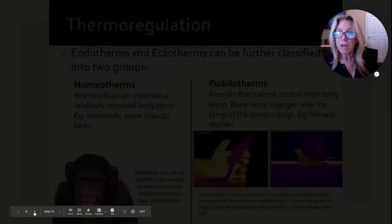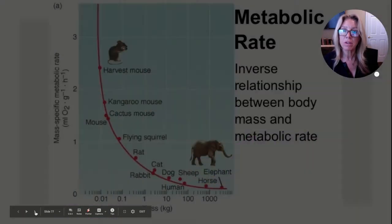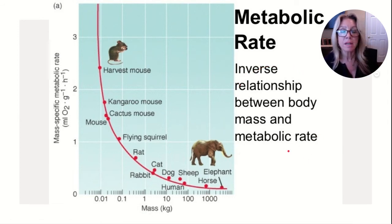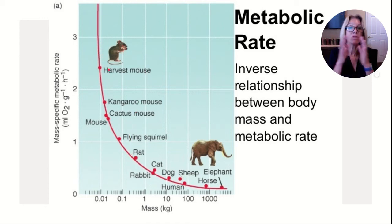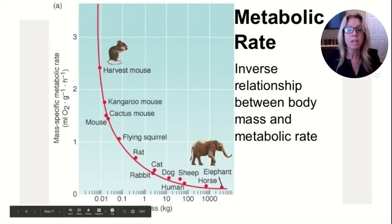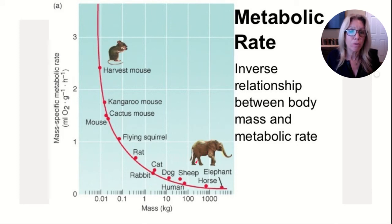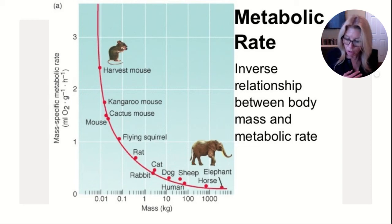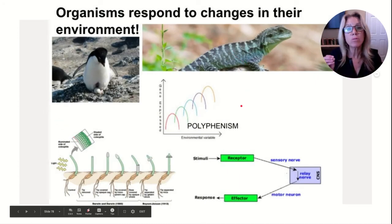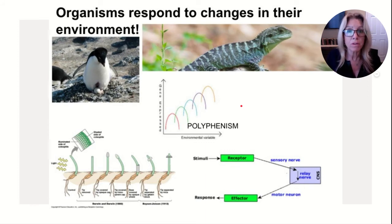Metabolic rate: there is an inverse relationship between body mass and metabolic rate in homeotherms. If you're small, you need a high metabolism because you have a large surface area per volume and lose a lot of heat. If you're larger, you can afford a slower metabolism because you have less surface area per volume. The larger the animal, the slower the metabolism.